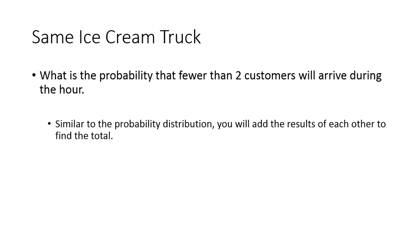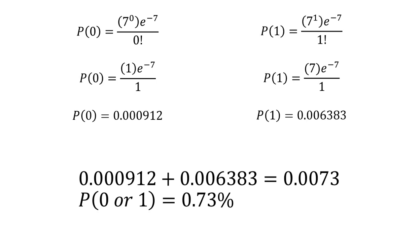Now let's say we have the same ice cream truck averaging seven, but what's the probability that they end up having fewer than two customers? That means they could have either one customer or no customers. It's the same thing as with your binomial distribution, where you find each individual and then you add them together. You would find the probability of zero, find the probability of one, add them together. The probability of zero is 0.09 percent, and the probability of one is 0.63 percent. You just add them together, getting you less than one percent. So there's less than a one percent chance that they will get less than two people on their ice cream truck visits.